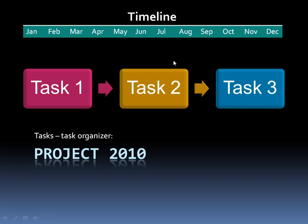Now each task is going to require some resources, and there are three types of resources. You have your workers, which is who's going to work on task 1 and task 2. For example, task 2 — writing the book — can have writers.